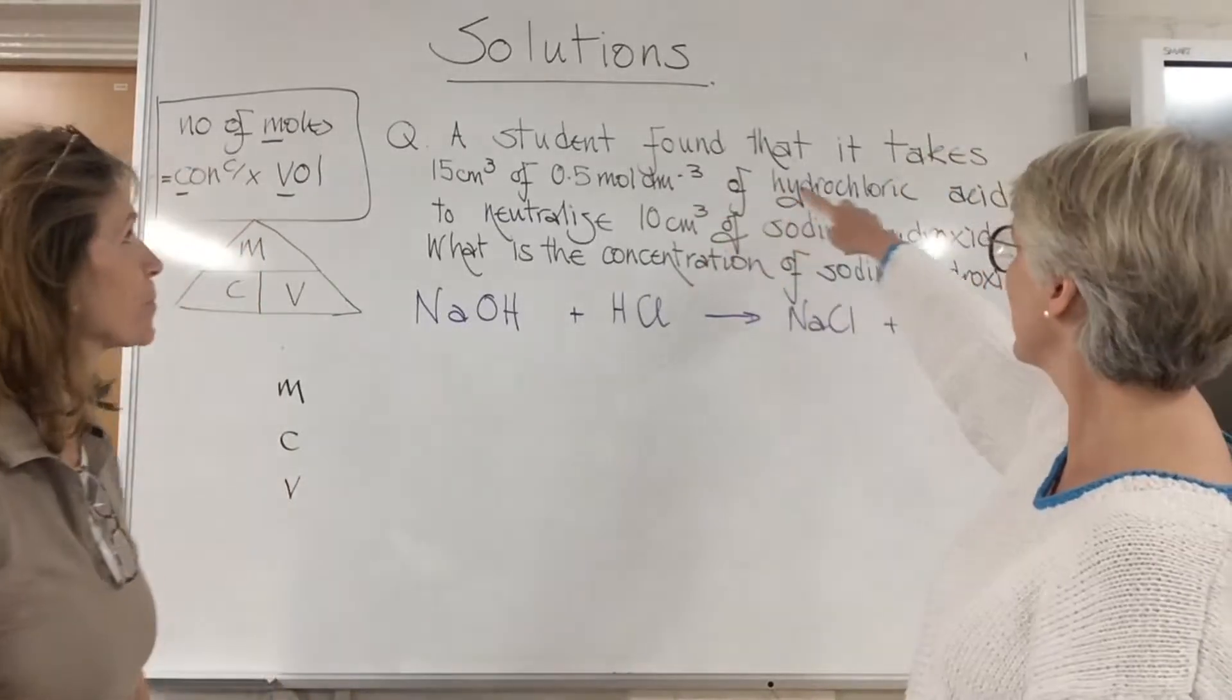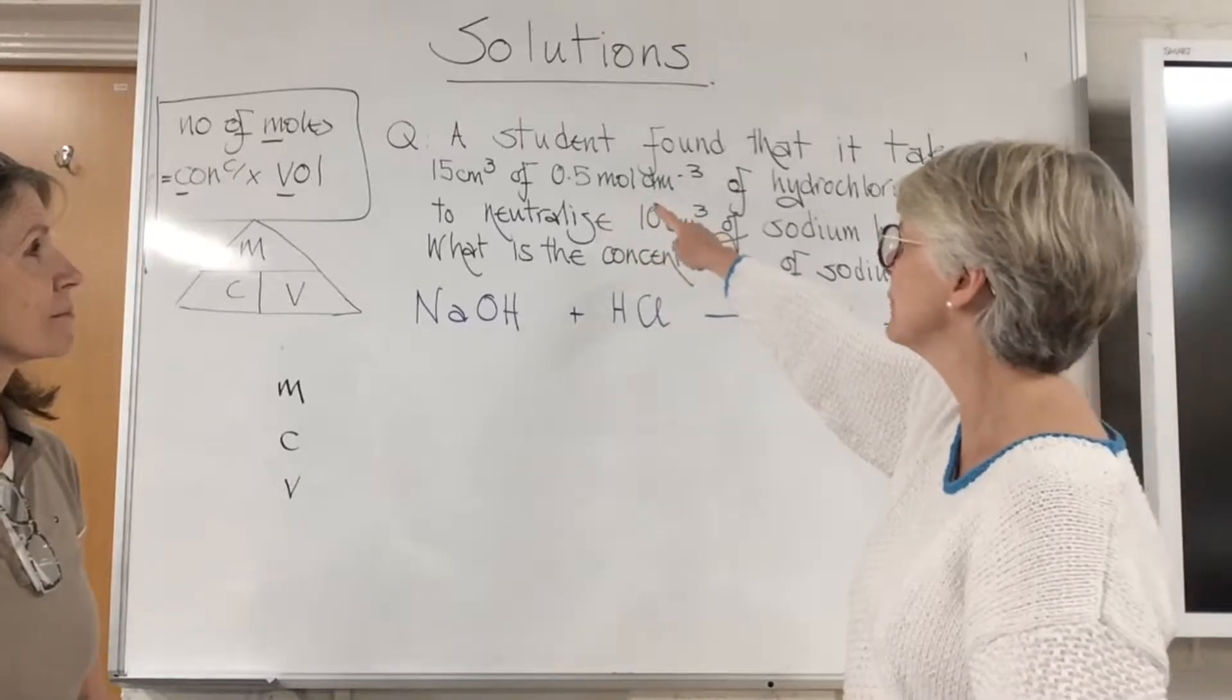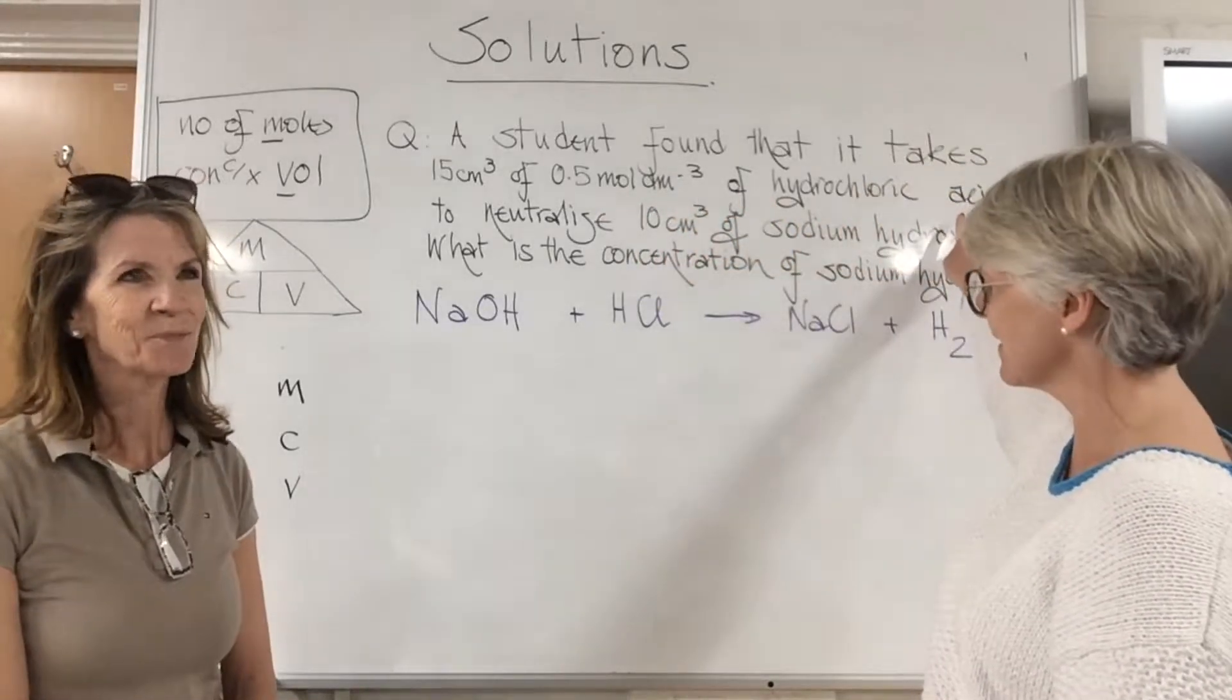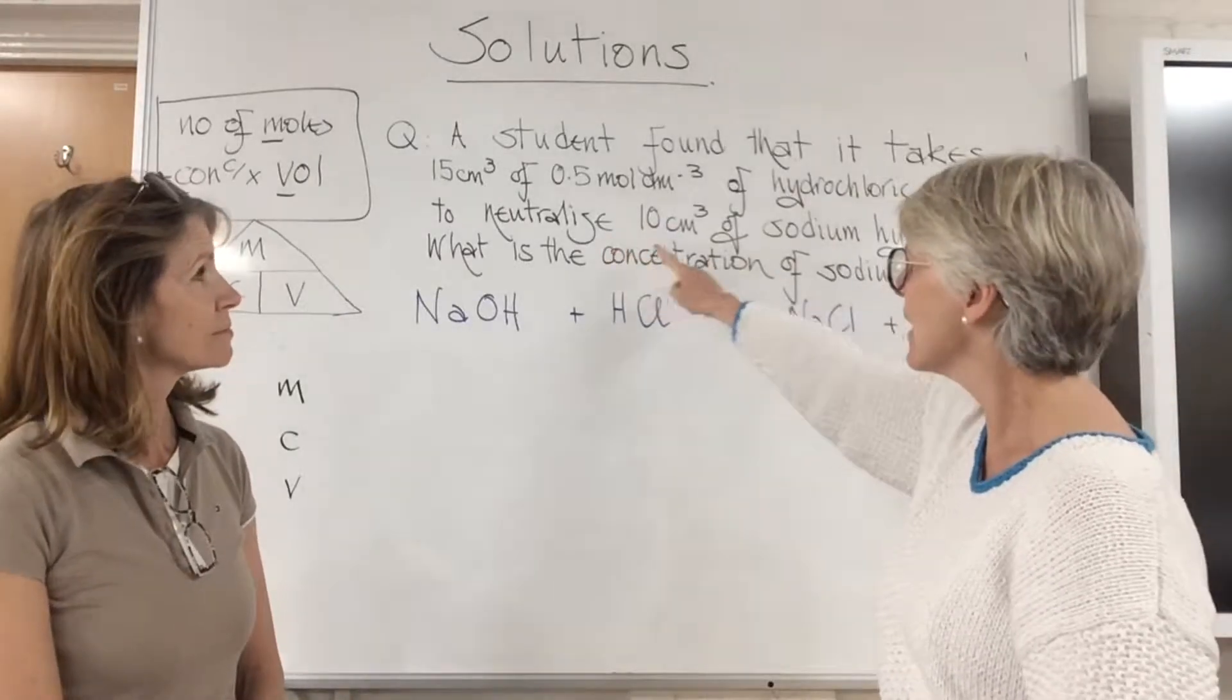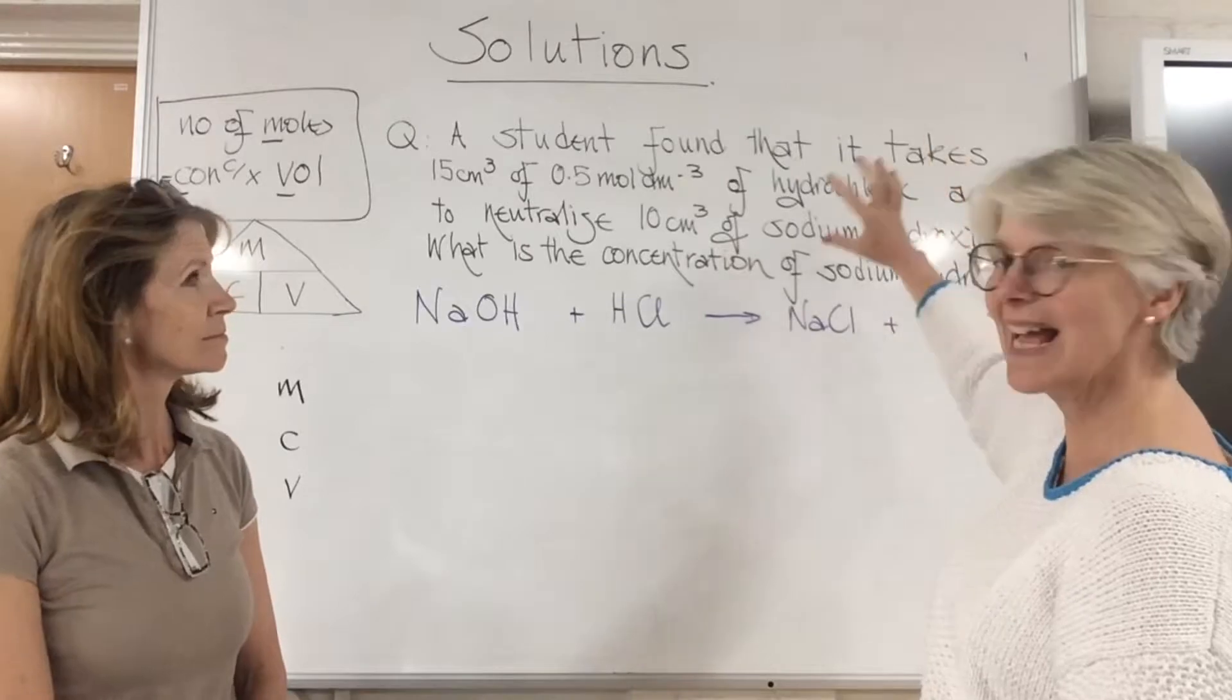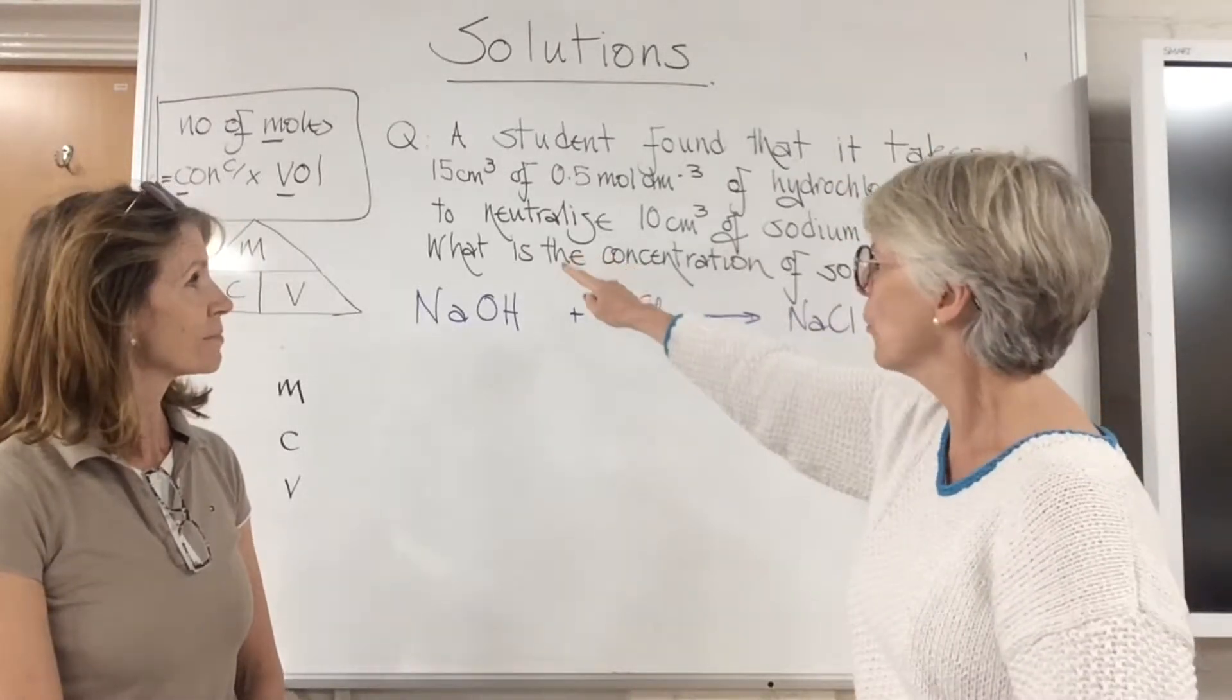A student found it takes 15 cm³ of 0.5 mol/dm³ of hydrochloric acid to neutralize 10 cm³ of sodium hydroxide. This is an acid-alkali titration question. What is the concentration of sodium hydroxide?